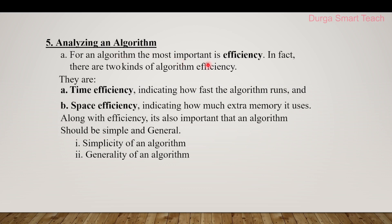After proving correctness, the next step is analyzing the algorithm. The most important aspect of algorithm analysis is efficiency. There are two kinds: time efficiency — how fast the algorithm runs — and space efficiency — how much extra memory it uses. If an algorithm takes less time and less memory, it is considered an efficient algorithm. Additionally, an algorithm should be simple and general — easy to understand, with simplicity and generality both considered during analysis.